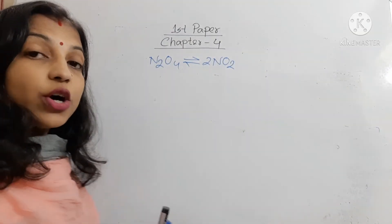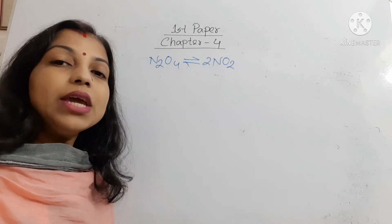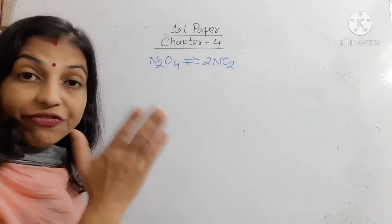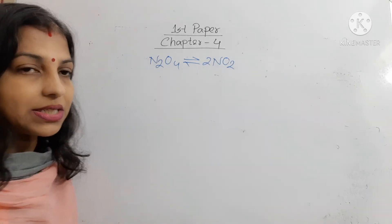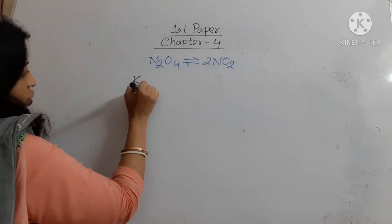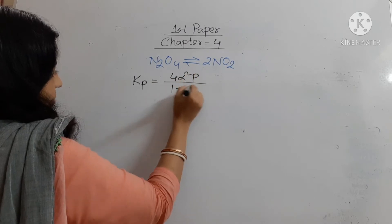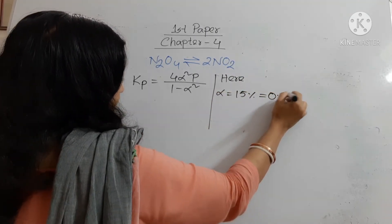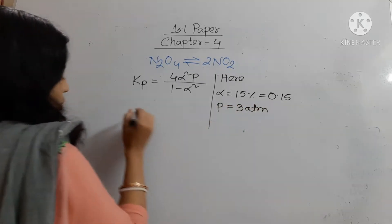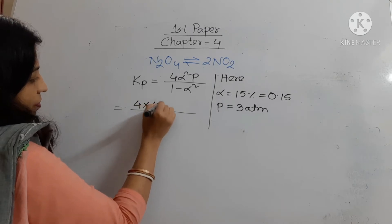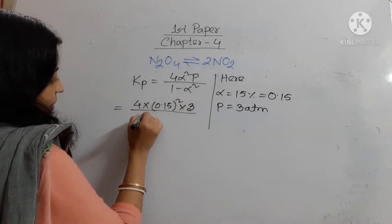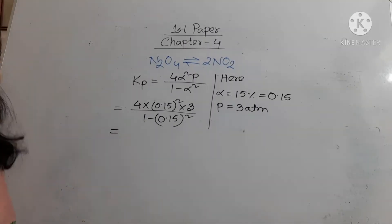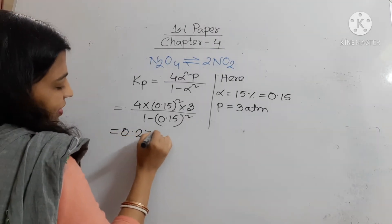To solve this math, first we calculate the value of Kp using the given values: pressure is 3 atm and α is 15%, that means 0.15. We know Kp = 4α²P / (1 − α²). Putting the values: Kp = 4 × (0.15)² × 3 / (1 − 0.15)². Calculating, the value is 0.2762 atm.